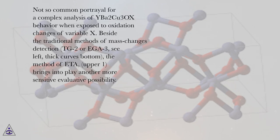Beside the traditional methods of mass changes detection, TG2 or EGA-3, see left, thick curves bottom, the method of ETA, upper 1, brings into play another more sensitive evaluative possibility.